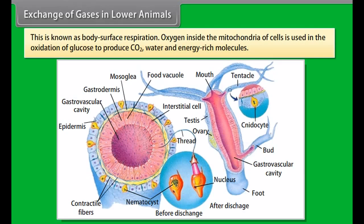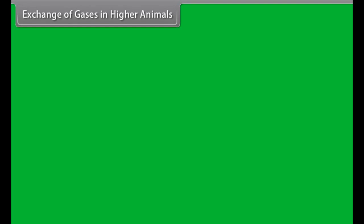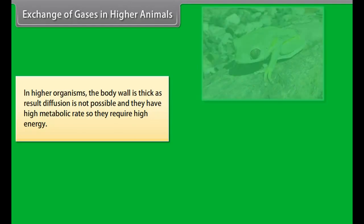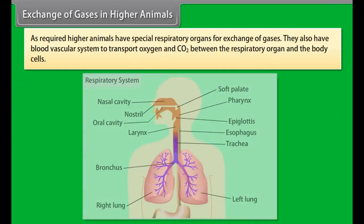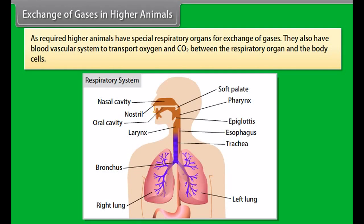In lower organisms there is no special organ for respiration, so every cell — in unicellular and multicellular organisms — takes part in respiration. Every cell is in direct contact with water, so there is direct exchange of oxygen from surrounding water and carbon dioxide from body cells, known as body surface respiration. Oxygen inside the mitochondria is used in the oxidation of glucose to produce CO2, water, and energy-rich molecules.